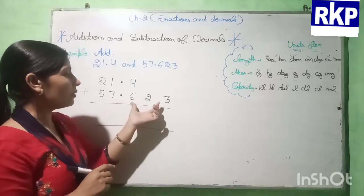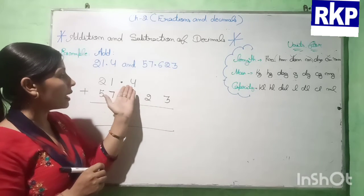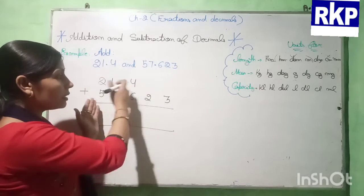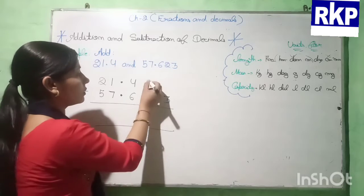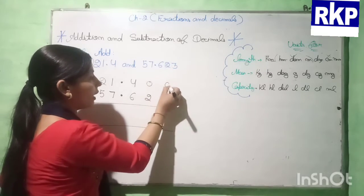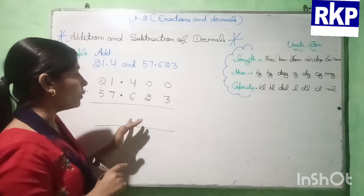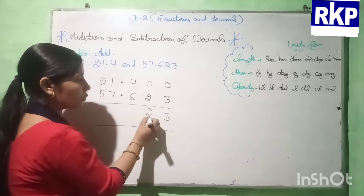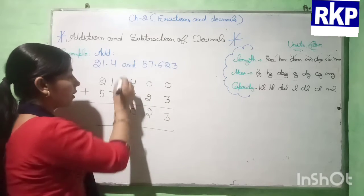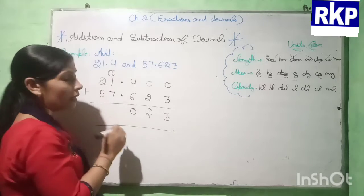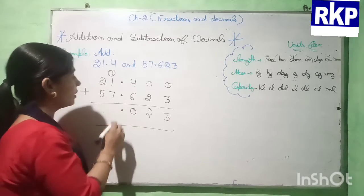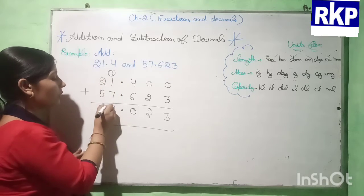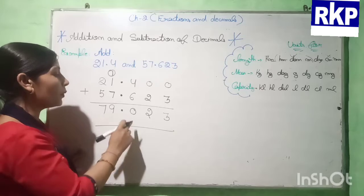Here we are having three digits after the decimal but here only one digit, so first we will convert these into like decimals. We will write zero here and here also zero. Now we add: 0 and 3 is 3, 0 and 2 is 2, 4 and 6 is 10 so 1 will be carry. Then 1 and 1 is 2, 2 and 7 is 9. So 79.023 will be our answer.